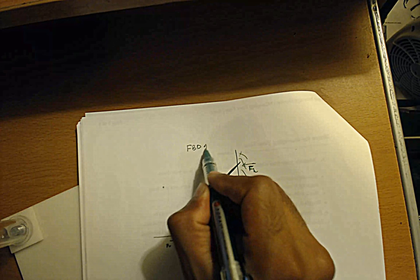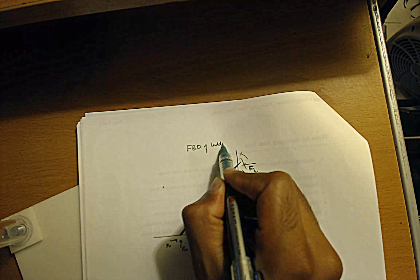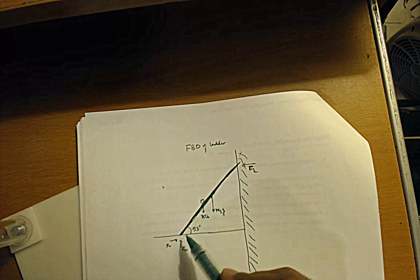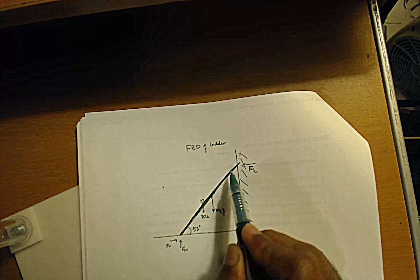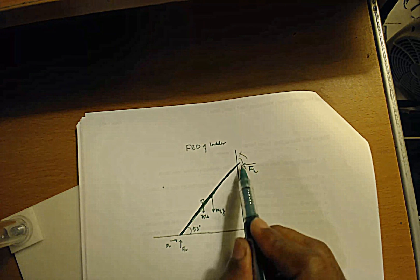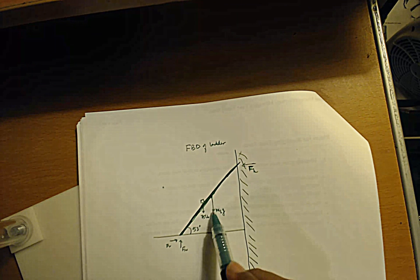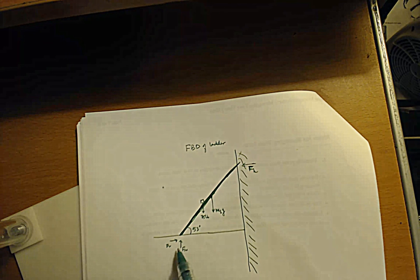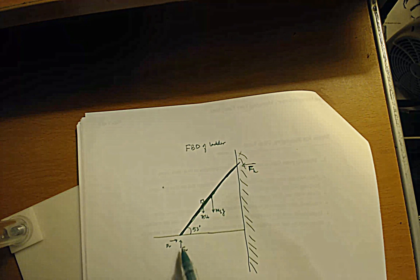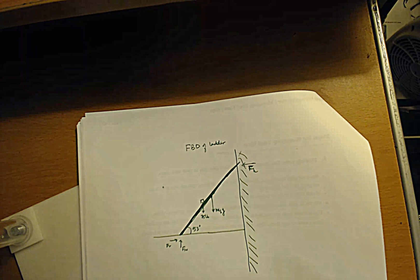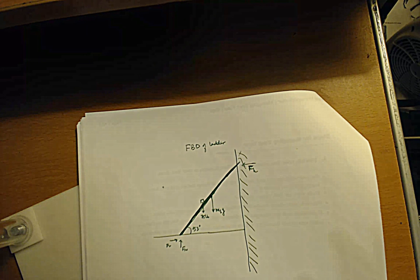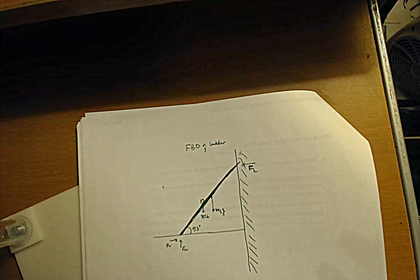This is the free body diagram of the ladder I just drew — all the forces acting on it. Since the wall is frictionless, there's just a normal force at 90 degrees with the wall. There's the weight of the ladder, the weight of the boy, the frictional force from the floor on the ladder, and a normal force from the floor.